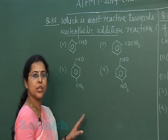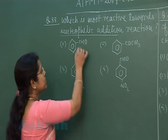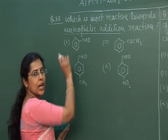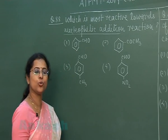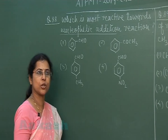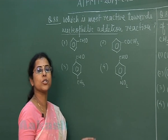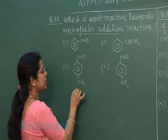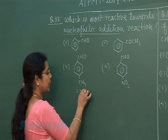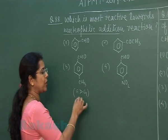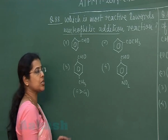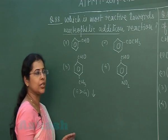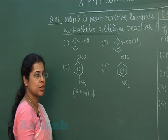The three aldehyde options have equal steric hindrance around the carbonyl carbon, so reactivity towards nucleophilic addition reaction is compared on the basis of positive charge on the carbon atom. The methyl group is an electron-donating group, which increases electron density around the carbonyl group and decreases reactivity towards addition reaction.